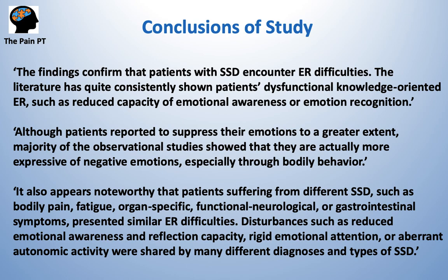If you didn't hear your specific symptom called out, it doesn't mean you're not included. They found many types of SSD — bodily pain, fatigue, organ-specific issues, functional neurological problems, and GI symptoms — all presented with similar emotion regulation difficulties. Reduced emotional awareness and reflection capacity, rigid emotional tension, or aberrant autonomic activity were shared across many different diagnoses. Any condition that hasn't been shown to have a structural or organic cause can be included here, and almost all had some type of emotion regulation issue.